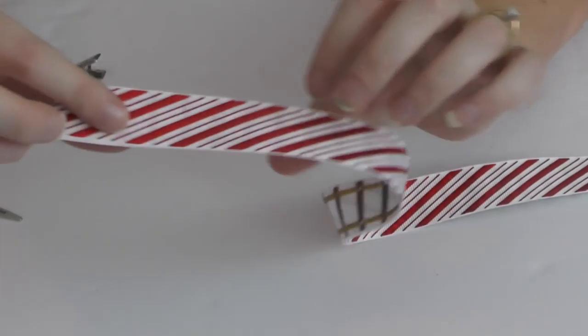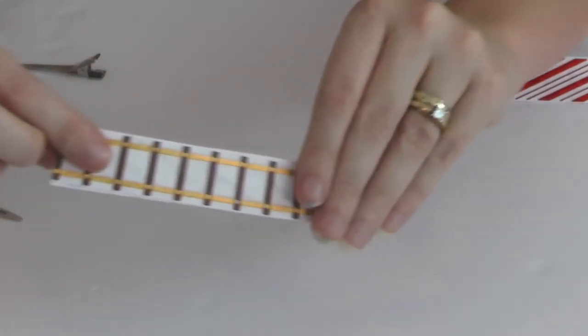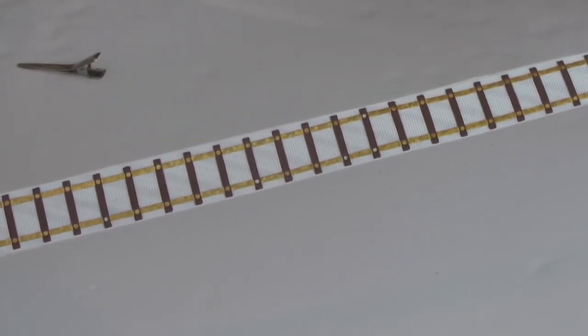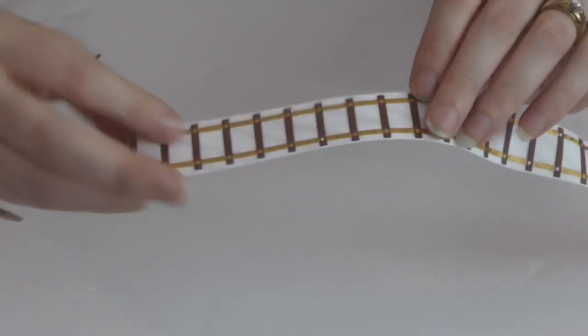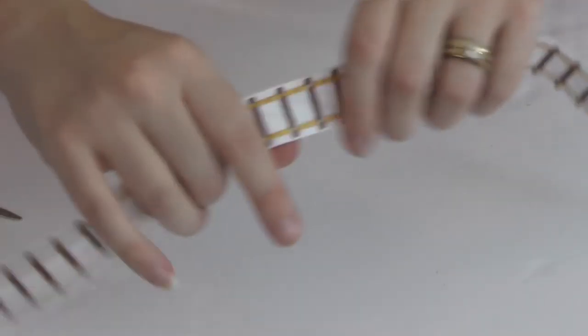Get it good and hot and sticky, and then put the other ribbon on top. What I did was put it in my heat press, or you can use an iron and fuse the two ribbons together, and they're not going to go anywhere.